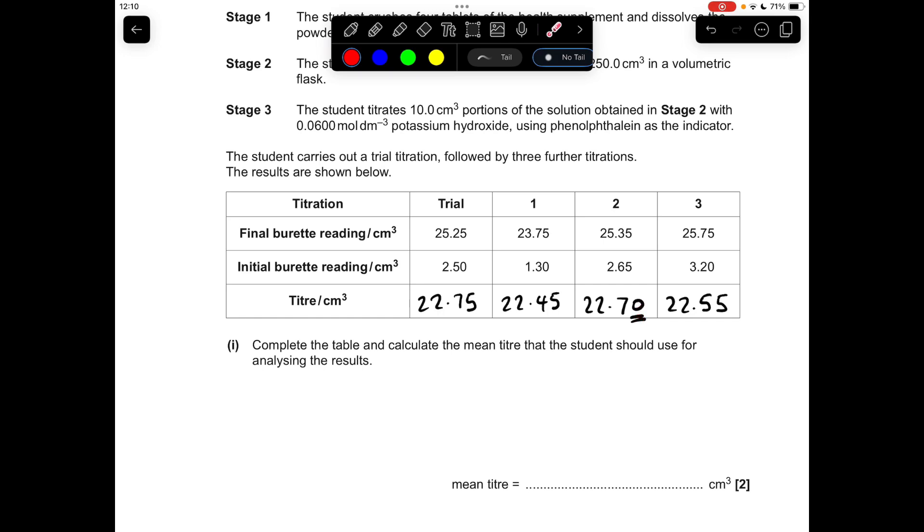So there's the numbers there, and now we've just got to decide what the student should use for the mean titre. Well, remember you never ever use the trial, so we're looking for concordant results for these three accurate titrations. We're looking for results that are within 0.10 of each other, so it's 1 and 3. So the mean's obviously 22.50. Don't forget that zero.